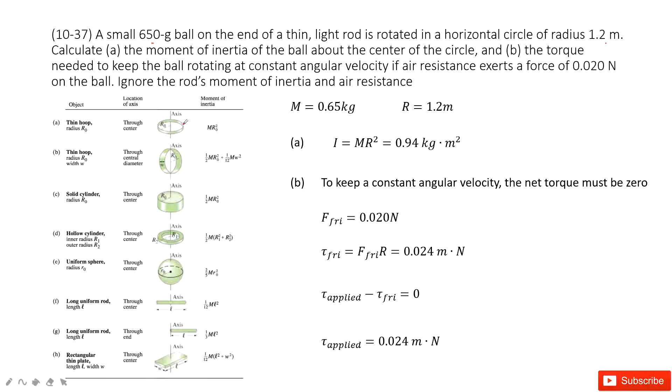So it looks like the ball is on a circle and it just rotates, right? So we can consider it is a thin hoop. So we look at this one.